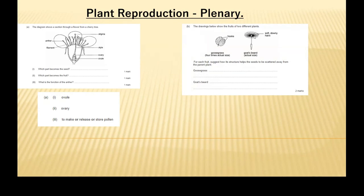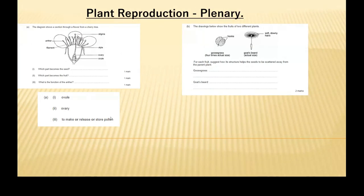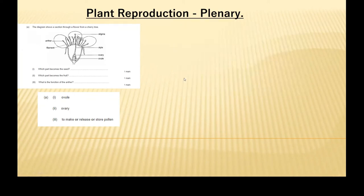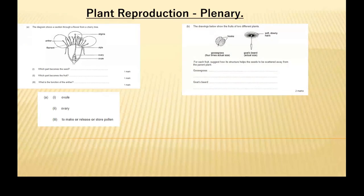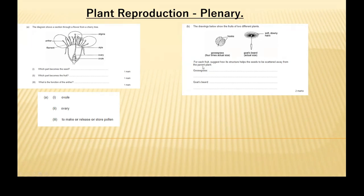Question B. The drawing below shows the fruits of two different plants. First, we have the goose grass, which has hooks on it. The second, we have a goat's beard and it has soft, downy hairs. For each fruit, suggest how its structure helps the seeds to be scattered away from the parent plant — so which type of dispersal and how is that beneficial?